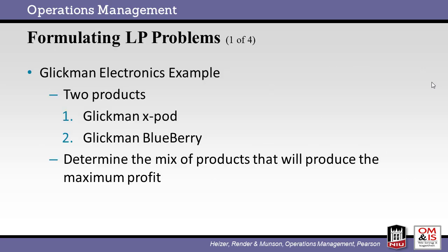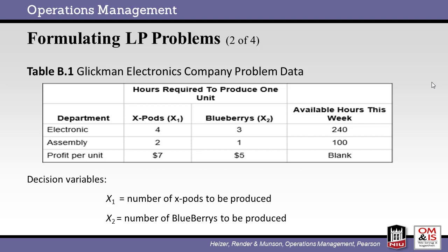For this example, we are trying to determine the product mix that will maximize profits. The company makes two products, so the example will be a good start. The first step is to gather data regarding the business. The two products go through the electronic and assembly departments for differing amounts of time. We see the unit profit for the products along with the capacity or available hours for the two departments. We set two variables, x1 and x2, to be the volume of the x-pods and blackberries, respectively.